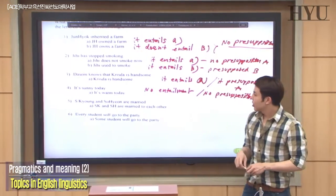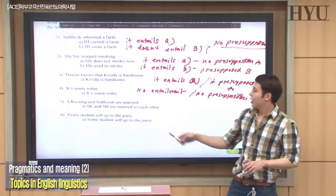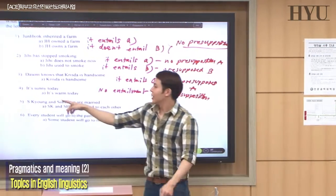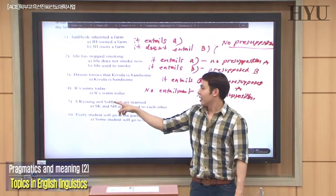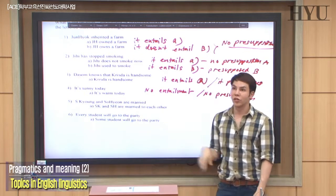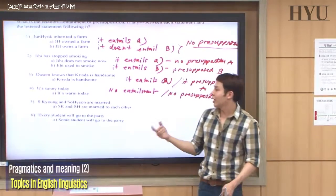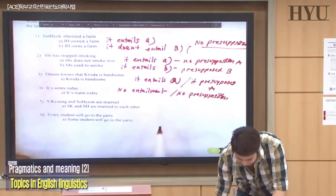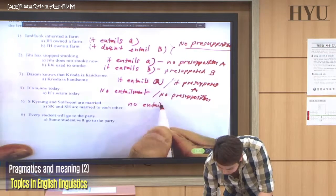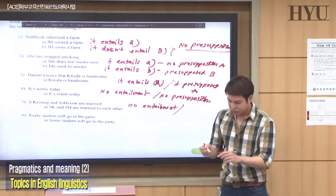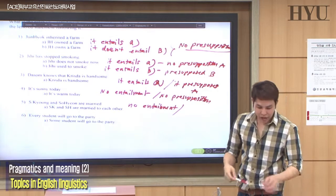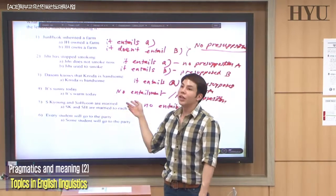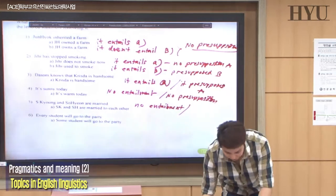Number five: 'S. Kyungwon and Sohyun are married.' Does it entail they are married to each other? Not necessarily — they may each be married to other people. So no entailment. For presupposition: 'Are they married?' — it doesn't mean they are married to each other either. So no presupposition.